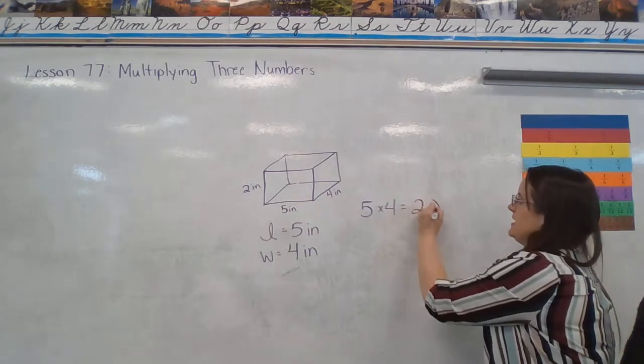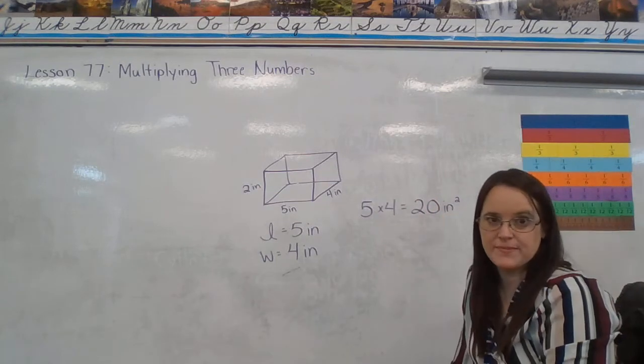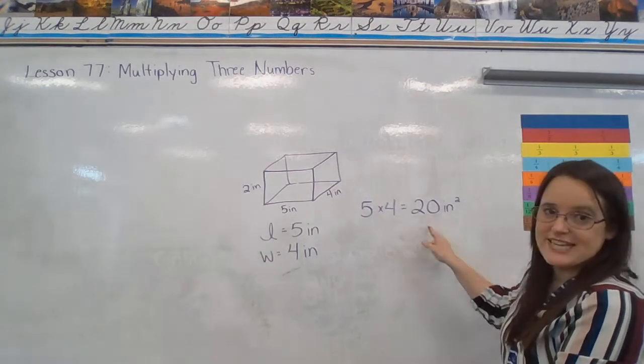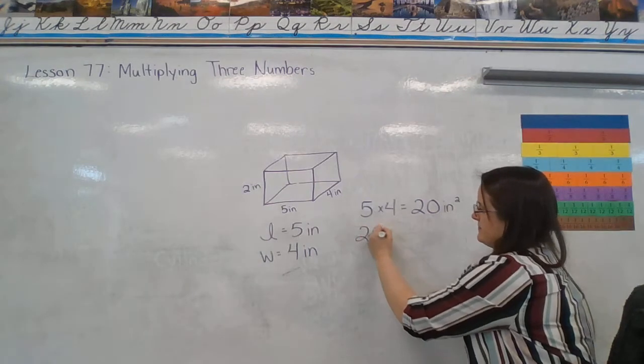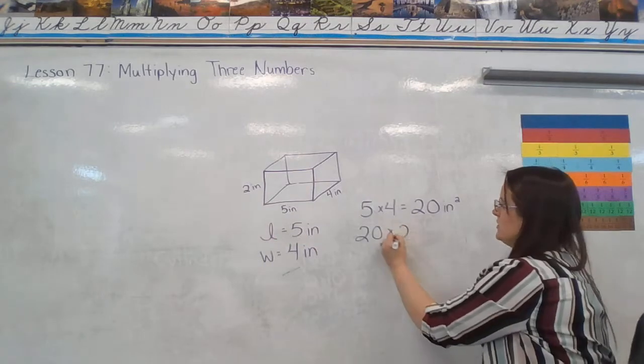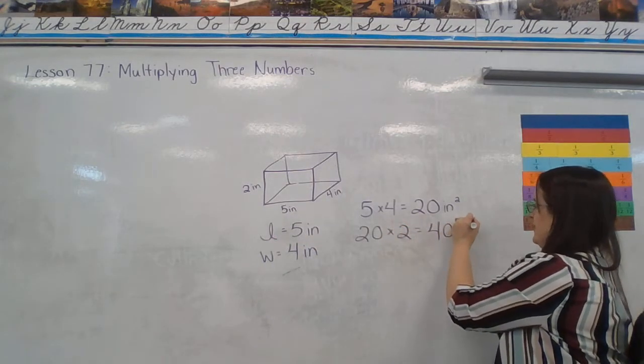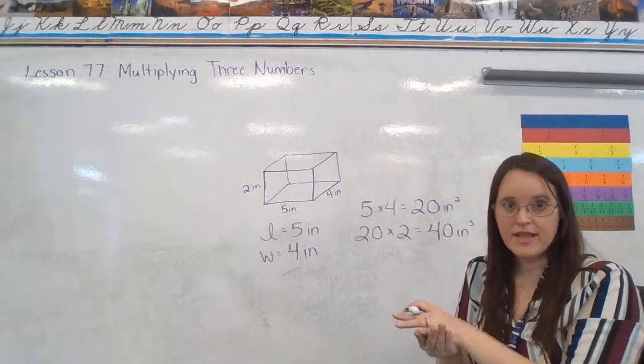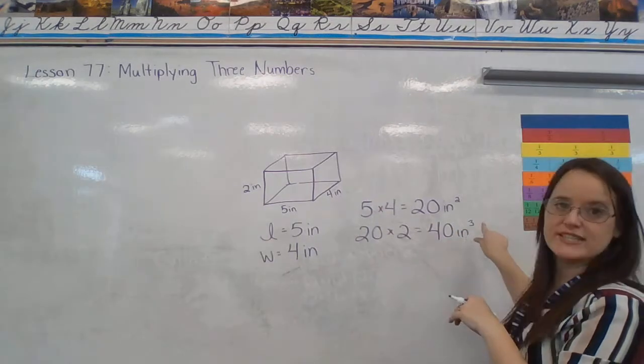So 5 times 4 gives me 20. And we would have square inches. But I need to find the volume, so then I have to take that 20 and multiply it times my height. How many layers do I have? I have 2. So now I get 40 and my inches aren't square anymore. They're not flat pieces of paper. They are cubes. So 40 inches cubed.